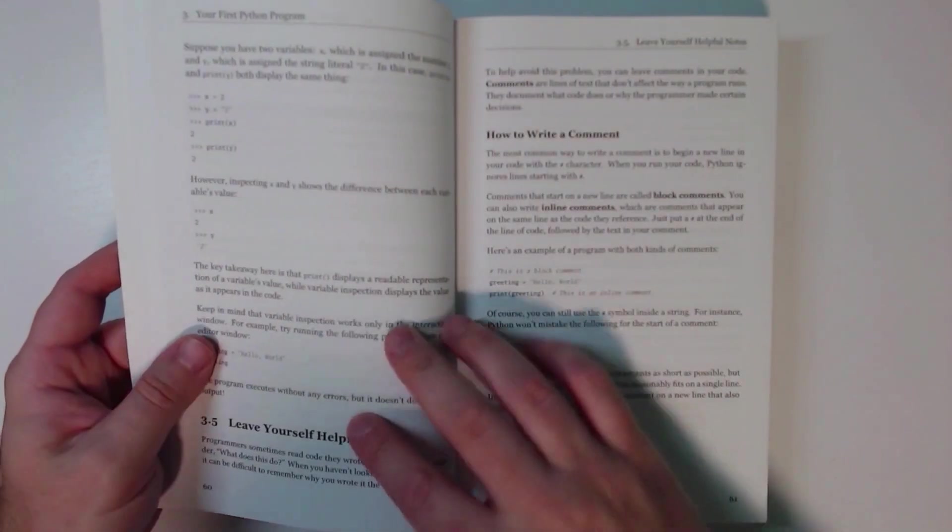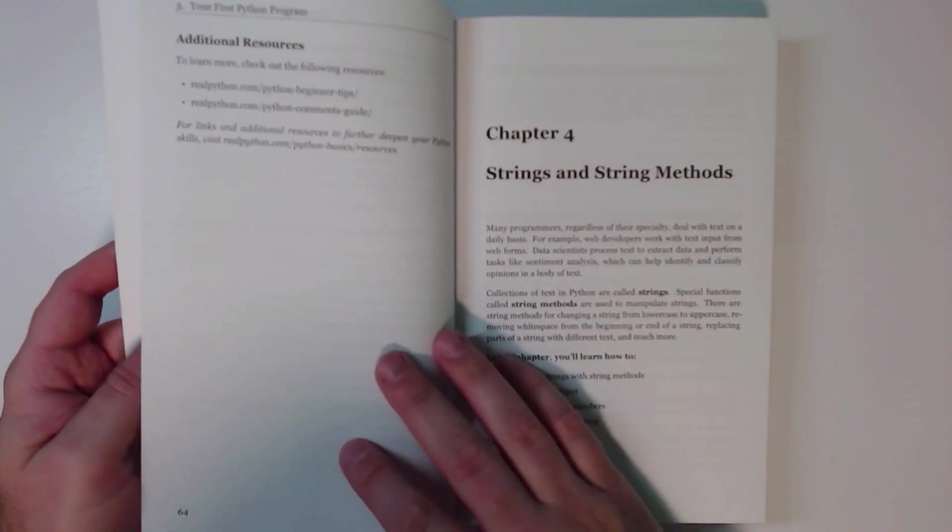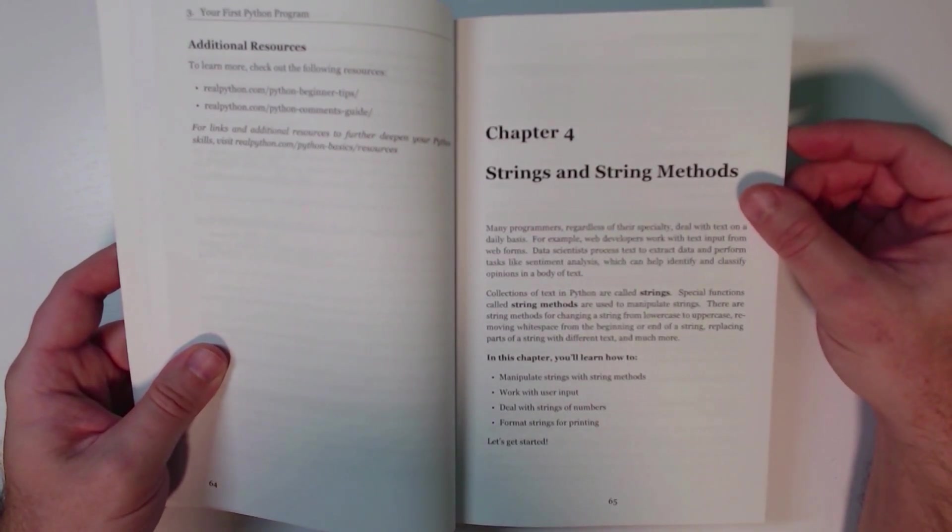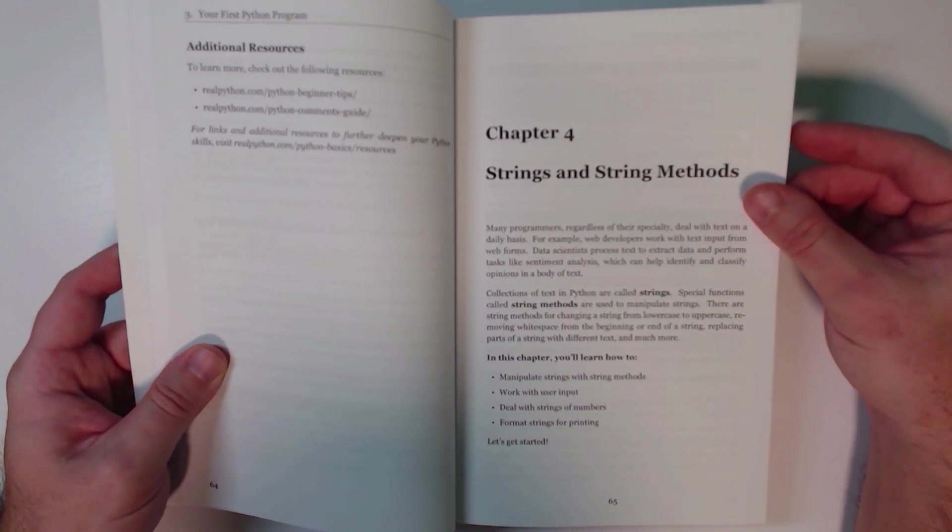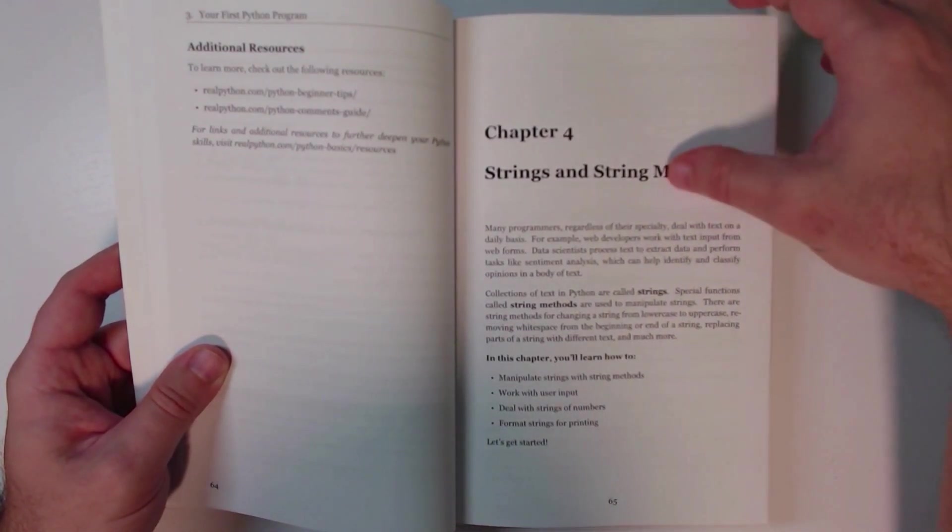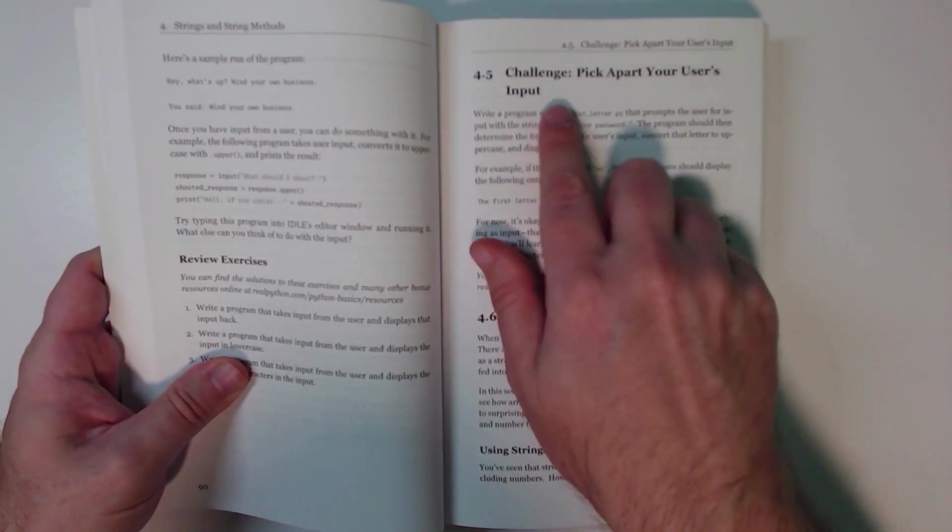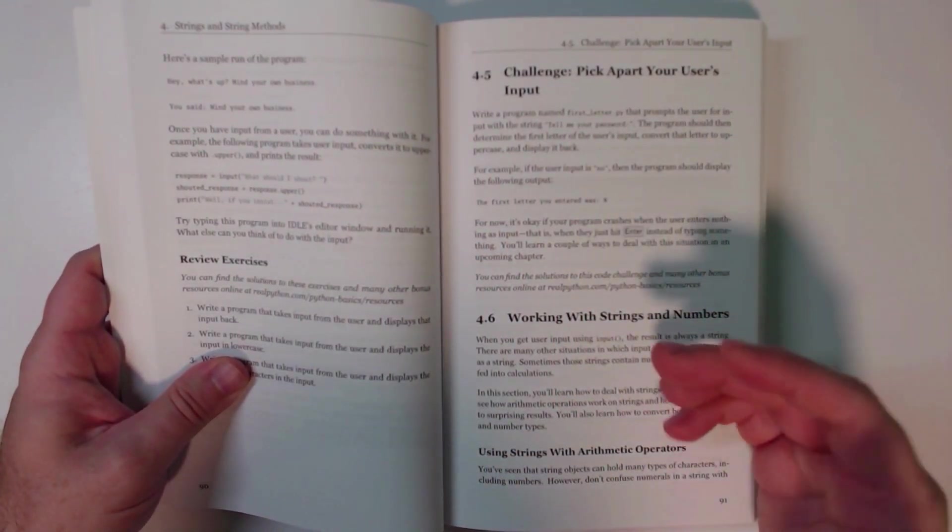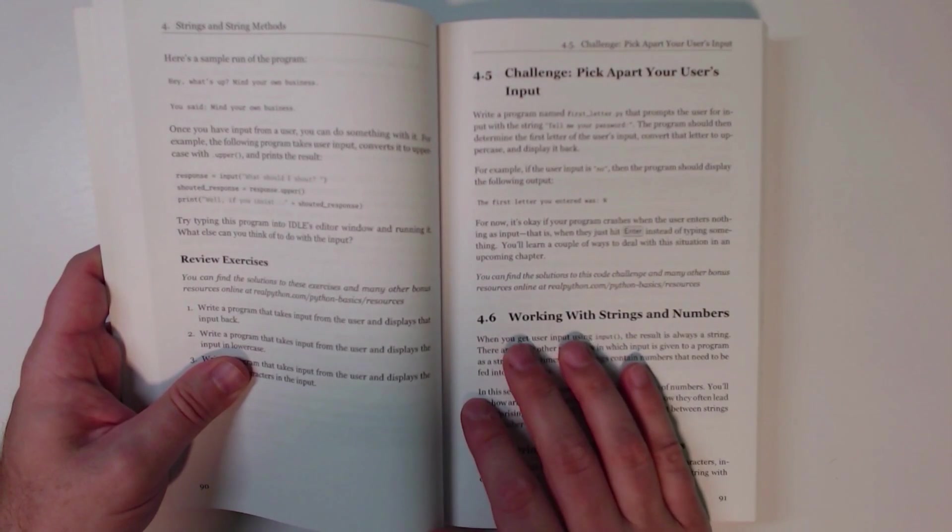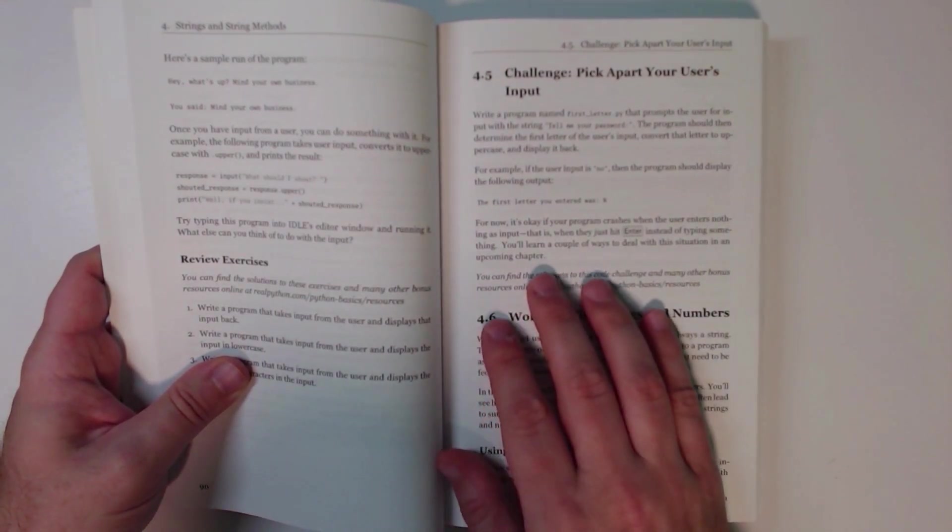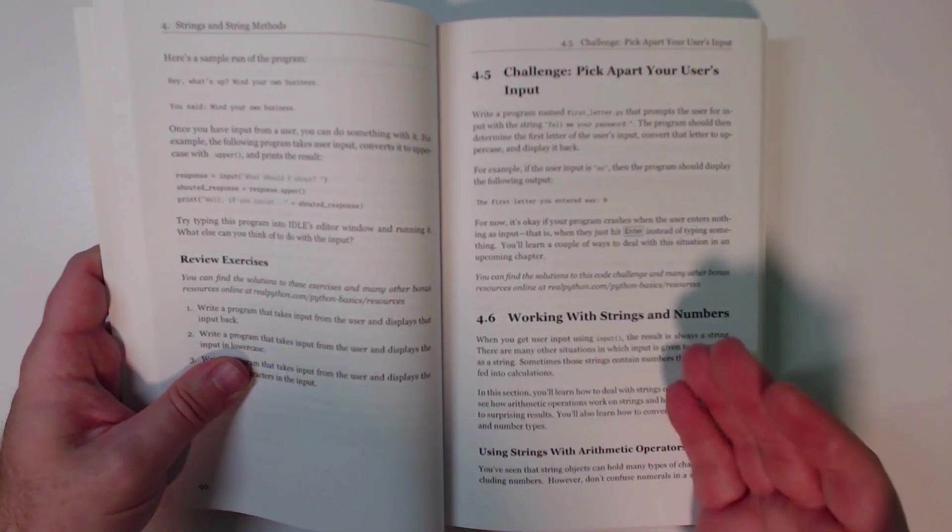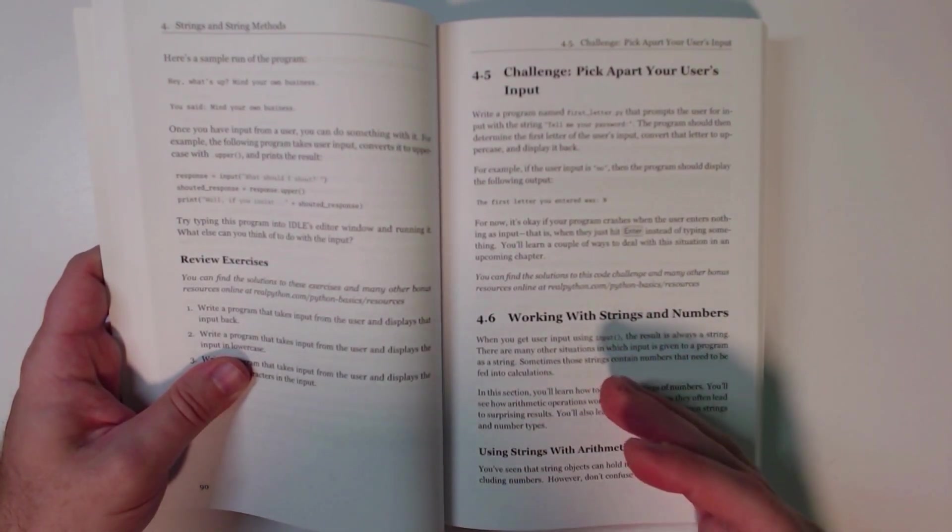But beyond that, chapters also have challenges. And a challenge is something that is much more difficult than an exercise. It's meant to really force you to think about and integrate the concepts you've learned in a little bit more meaningful way, whereas the exercises really are just kind of a review of the content in the section. Here's an example of a challenge: Pick apart your user's input. So this is one of the earliest challenges in the book, so it's not the most difficult one. They do sort of increase in difficulty as you work your way through the book. But it's a little bit more challenging, requires a little bit more higher level thinking than what you get out of the review exercises. So nearly every chapter has a challenge and most chapters have multiple challenges.